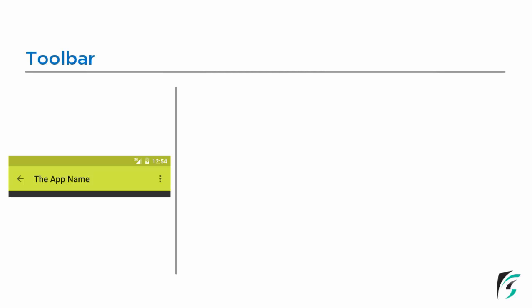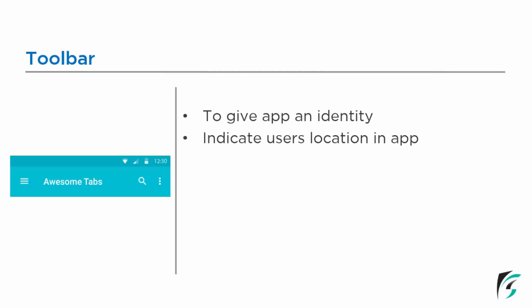Now let us talk about the toolbar. Toolbar also does the same. It is used to give our application an identity. We can give the application title in the toolbar. It helps the user to indicate his location in the Android application, because there is a title in the toolbar. We can change the title according to the change in the activity and location of the user in the application. Same as the action bar, toolbar is also used to access important functions and actions in our application.